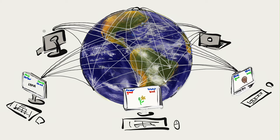The idea behind the test is simple. Certain concepts just go together — mother and father, bread and butter. This means it's easier for our minds to connect them, and things that are easier should be faster. So imagine this: you sit down at a computer and are shown pictures of flowers and insects. All you have to do is sort them. Sometimes you're sorting flowers with good words — words like sunshine, love, peace, and joy. And insects with bad words: devil, bomb, war, vomit.